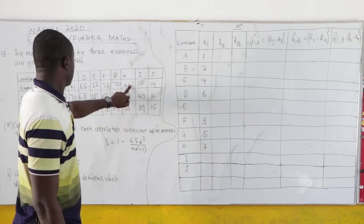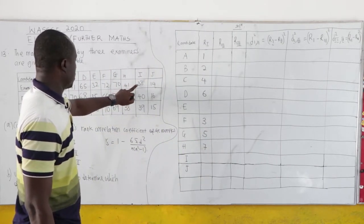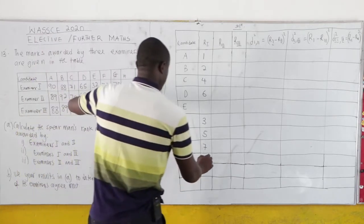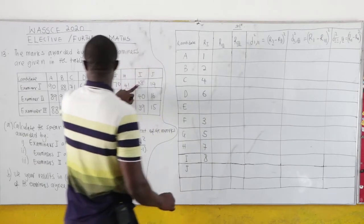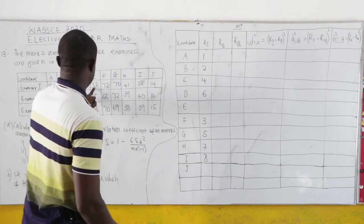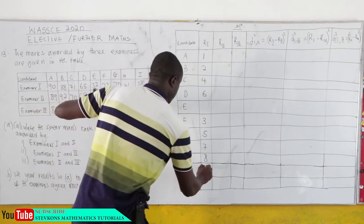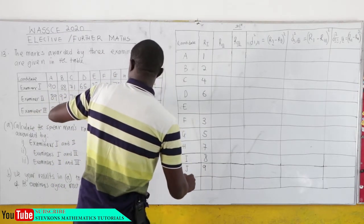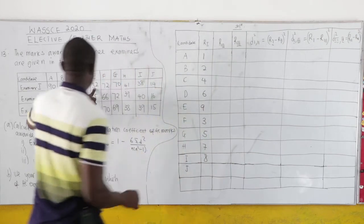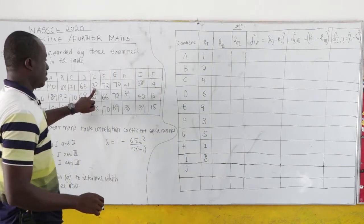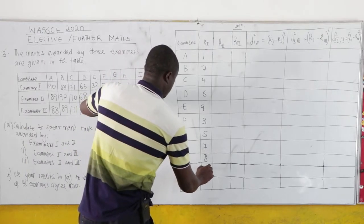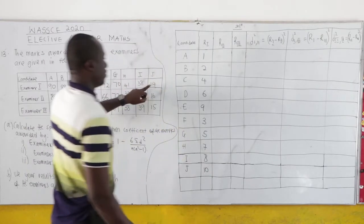Continuing the ranking for examiner 1: 41 — candidate H is ranked 7th, 38 is ranked 8th, the next value is ranked 9th, and the lowest mark belongs to candidate J, which is ranked 10th.